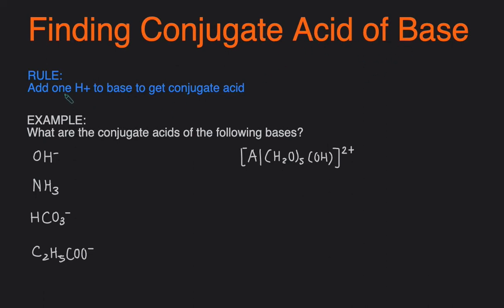Well, you just have to add one H-plus to the base and that'll give you the conjugate acid. Let's take a look at some examples. We're given multiple bases and we have to figure out the conjugate acid of these bases. So all we have to do is just add H-plus to it.